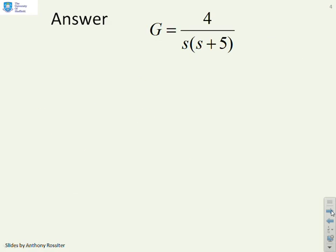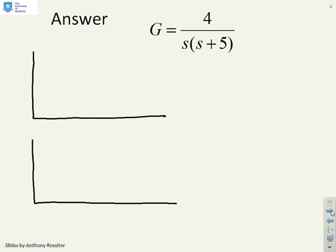As ever, we will start the answers by doing some simple sketches. We'll look at the Bode gain and the Bode phase. This system has a single corner frequency at 5. It's got an integrator, so the gain plot will go down and then steeper down. I can actually work out the position of the asymptotes by inspection — it's going to be 4 over 25. The actual Bode plot will be smaller than that by a factor of root 2.